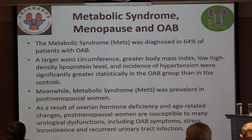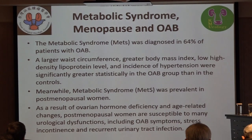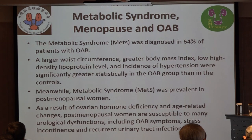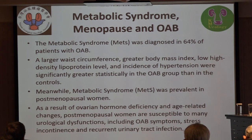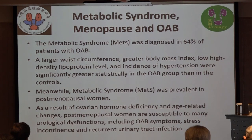Metabolic syndrome is highly prevalent in patients with overactive bladder (OAB). Compared to controls, OAB patients have larger waist circumference, greater BMI, lower HDL level, and higher incident hypertension. Metabolic syndrome is also highly prevalent in postmenopausal women as a result of ovarian hormone deficiency. Age-related changes make postmenopausal women susceptible to many urological dysfunctions such as OAB symptoms, stress incontinence, and recurrent UTI.